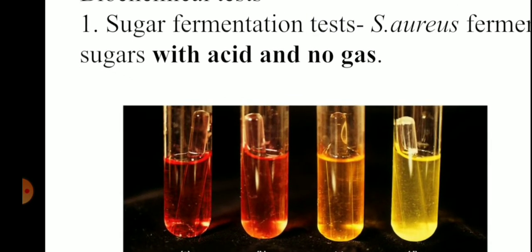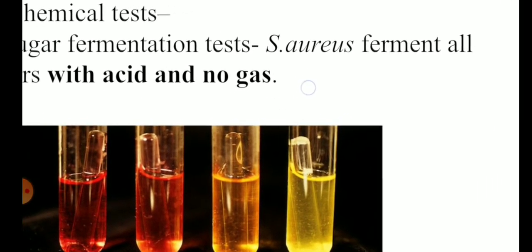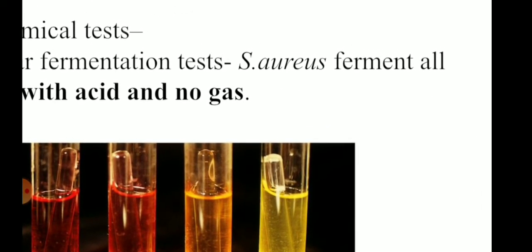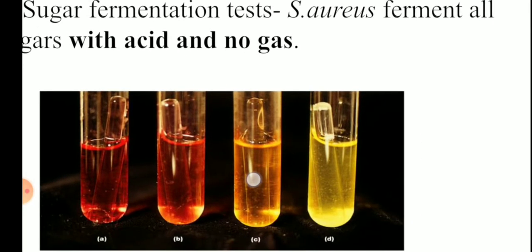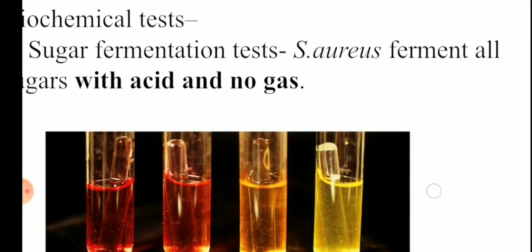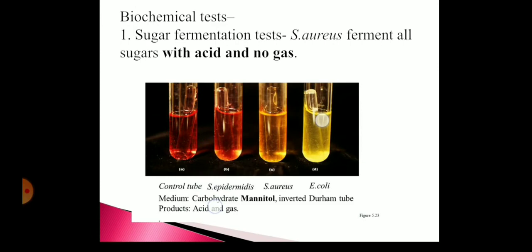For biochemical testing, we first perform sugar fermentation. Staphylococcus aureus ferments all sugars with only acid and no gas — seen in the third and fourth tubes which show only acid production. The first and second tubes are negative. This is called anaerogenic fermentation.